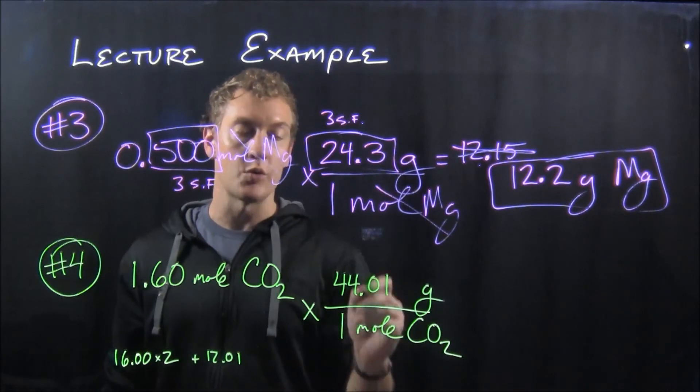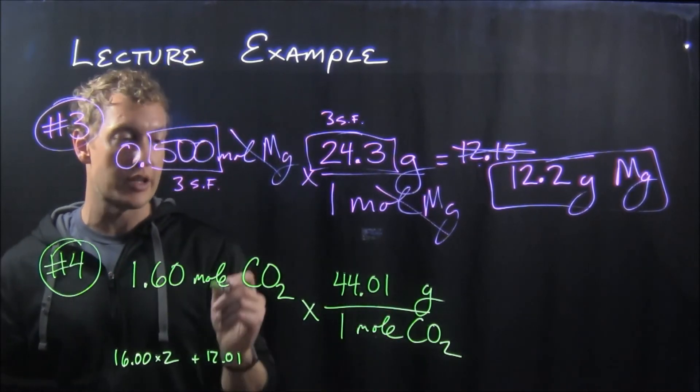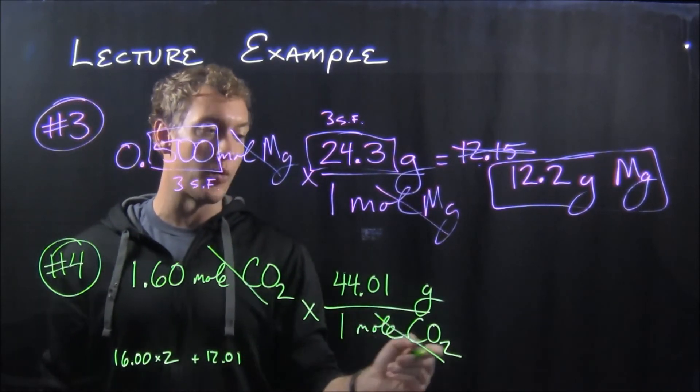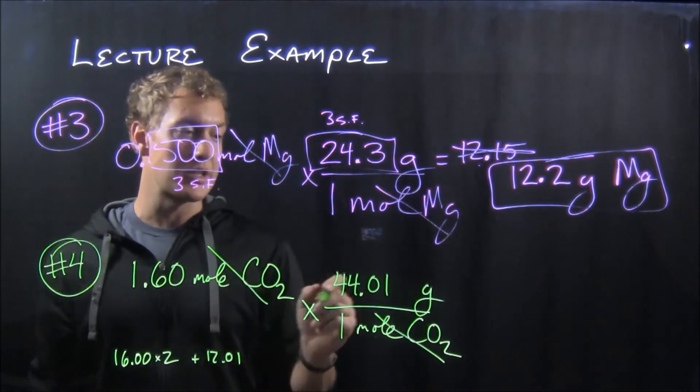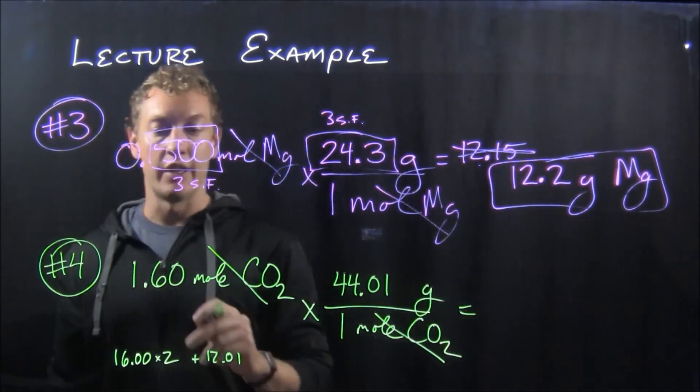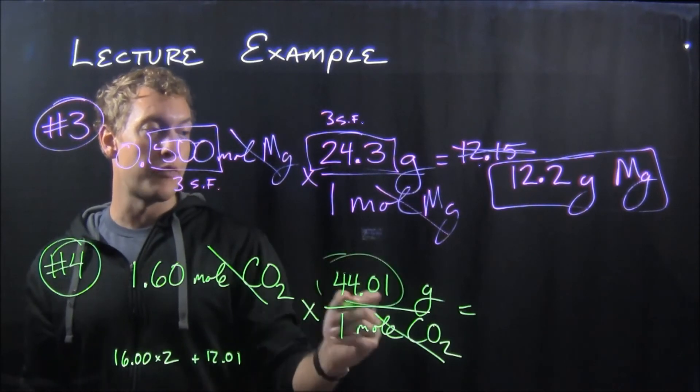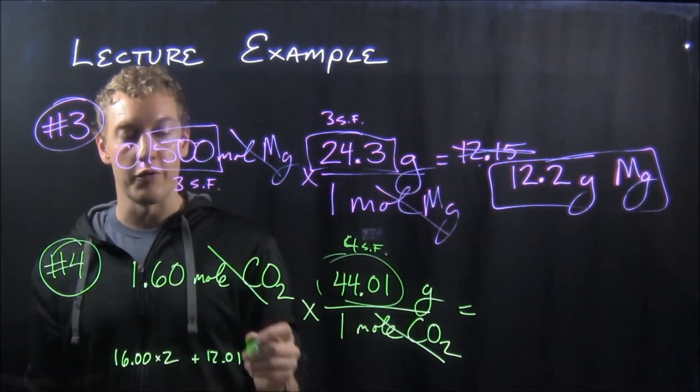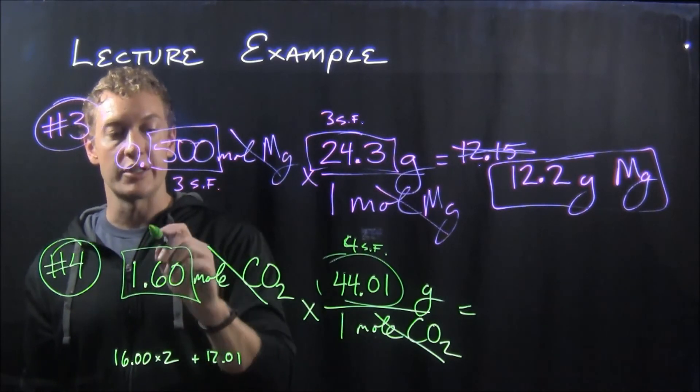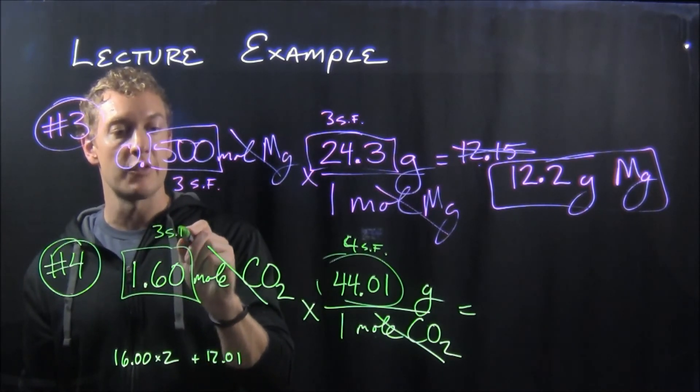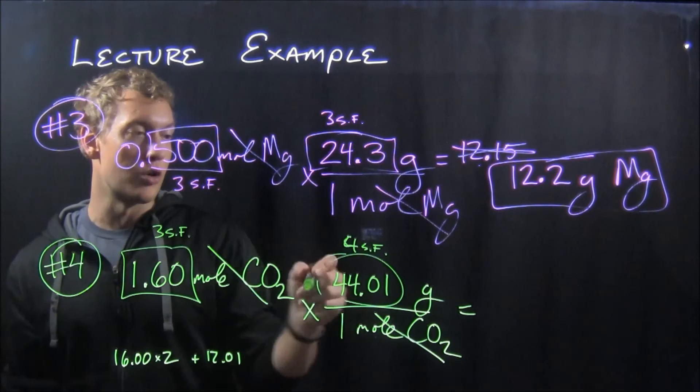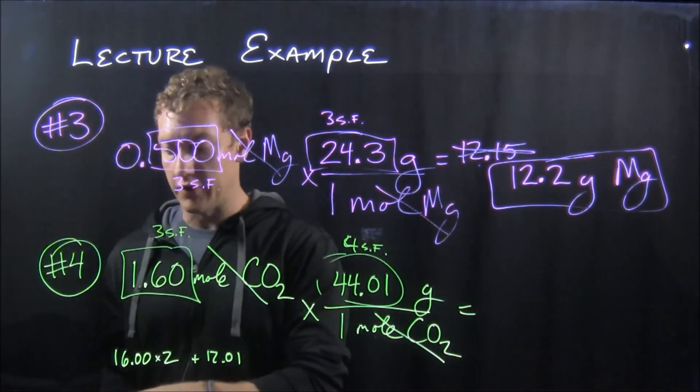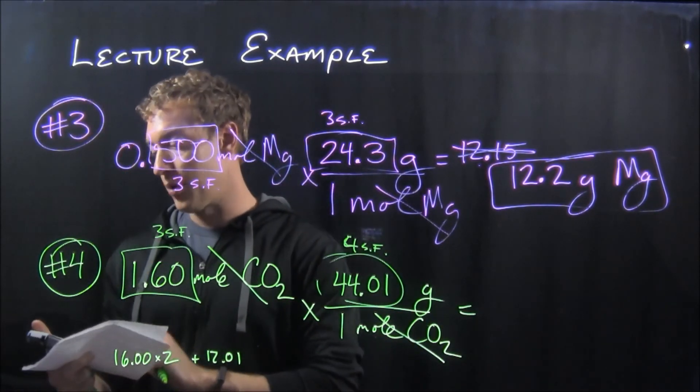...of carbon dioxide is equal to one mole of carbon dioxide. So now moles will divide away and you've got 1.60 times 44.01, and then you have four significant figures there in 44.01. 1.60 is three significant figures, and so our answer will just report it to three significant figures.